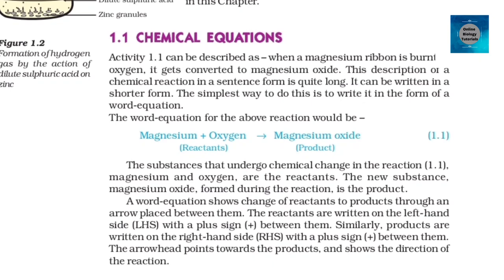The reactants are written on the left-hand side (LHS) with a plus sign between them. Similarly, products are written on the right-hand side (RHS) with a plus sign between them. The arrowhead points towards the products and shows the direction of the reaction.